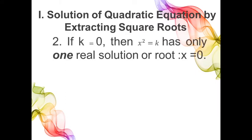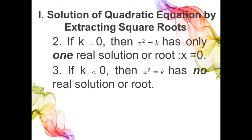Second, if k is equal to 0, then x squared equals k has only one real solution or root. That is, x is equal to 0. And third, if k is less than 0, meaning k is negative, then x squared equals k has no real solution or root.